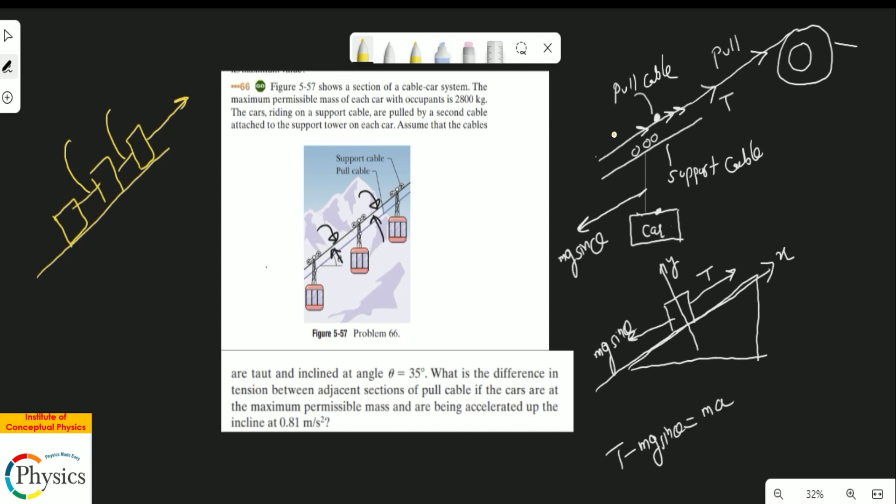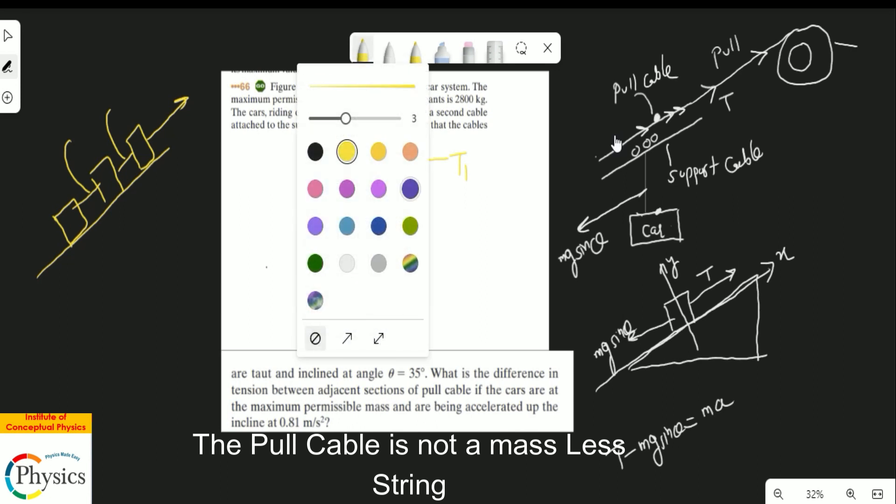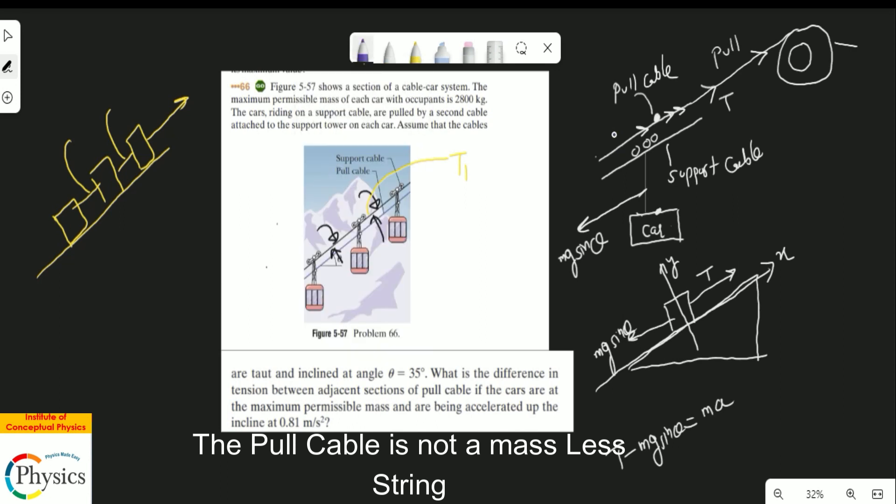The tension here and the tension here might be different, and this is what they're trying to convey. I think the language is very cryptic and not so clear. Let's say the tension in this particular section is T1—I will use a separate color so you can see it very clearly, maybe a darker one—and there is a tension here. Let this be T2.